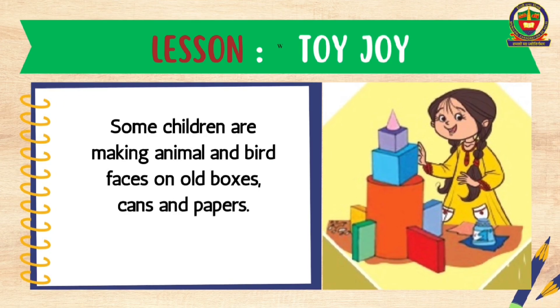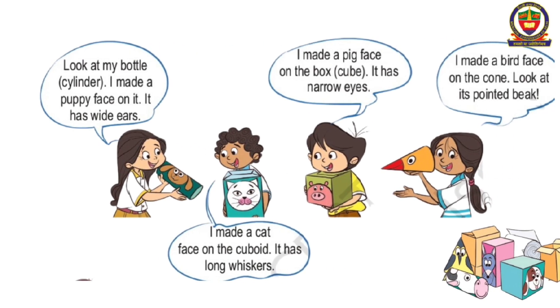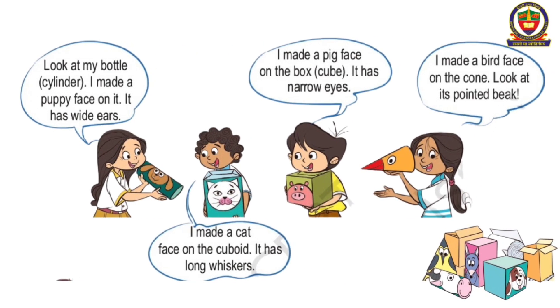Some children are making animal and bird faces on old boxes, cans and paper. Look at my bottle — it's a cylinder. I made a puppy face on it. It has two ears.